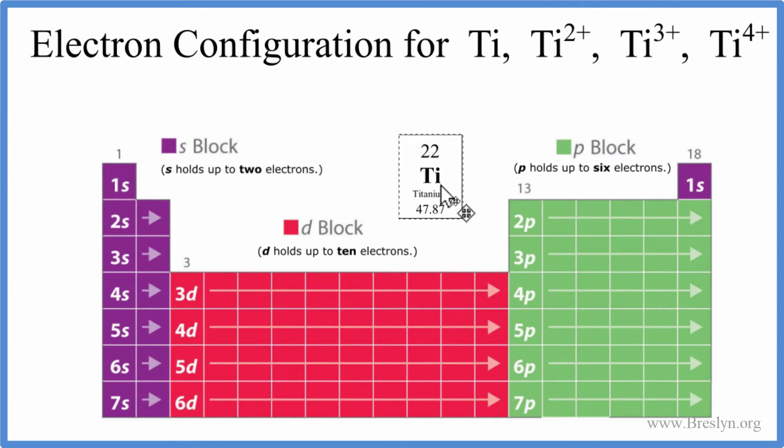On the periodic table, we look up titanium. Its atomic number is 22. That means it has 22 protons. And because it's neutral, it doesn't have a plus charge up here like these ions. Because it's neutral, protons equal electrons. We have 22 electrons to write the electron configuration for titanium.